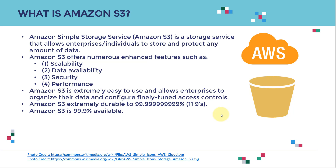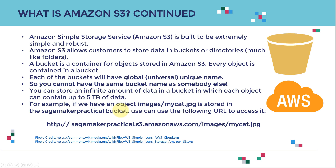Amazon S3 is extremely durable — we call it eleven nines, which is 99.999999999% durability — and it is 99.9% available. Simply put, you can train an AI or ML model without S3 going down. I've been using SageMaker for quite a while and I've never seen an issue with S3 being unavailable.